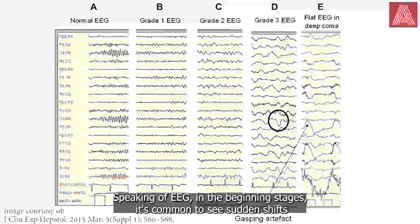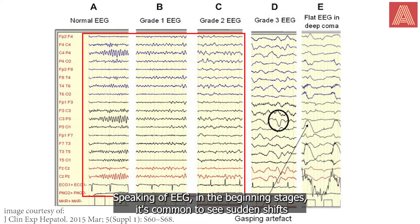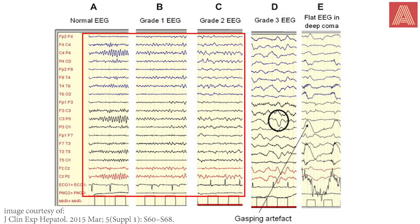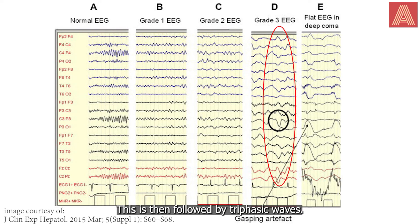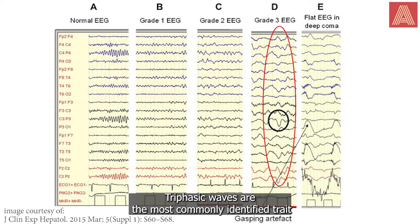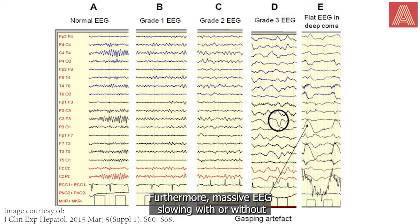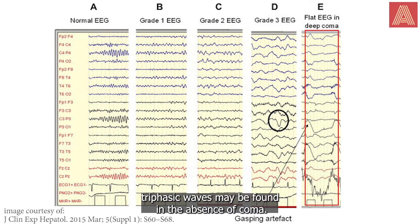Speaking of EEG, in the beginning stages it's common to see sudden shifts between a normal alpha frequency and slowing. This is then followed by triphasic waves. Triphasic waves are the most commonly identified trait and can be seen in both conscious and unconscious patients. Furthermore, massive EEG slowing with or without triphasic waves may be found in the absence of coma.